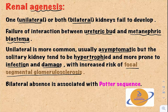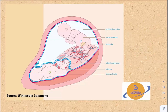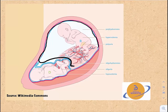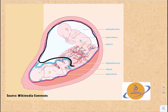Bilateral cases are associated with something called Potter sequence. The amniotic fluid contained within the amniotic cavity has a cushioning function that helps protect the baby against compression by surrounding structures. This amniotic fluid is produced through the fetal urine, so any abnormalities in the formation of fetal urine — either through agenesis or malformation of both kidneys or obstruction of the urinary outflow — leads to reduced formation of amniotic fluid, a condition called oligohydramnios.